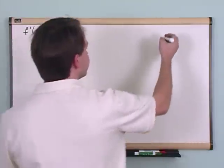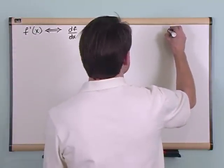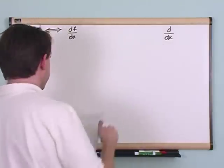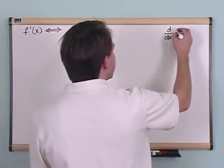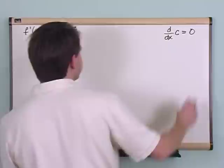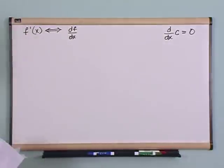So the first one is the derivative with respect to x, you can write it as d dx here, almost like a fraction, of a constant, that's what c means, is 0. That's kind of like a property.